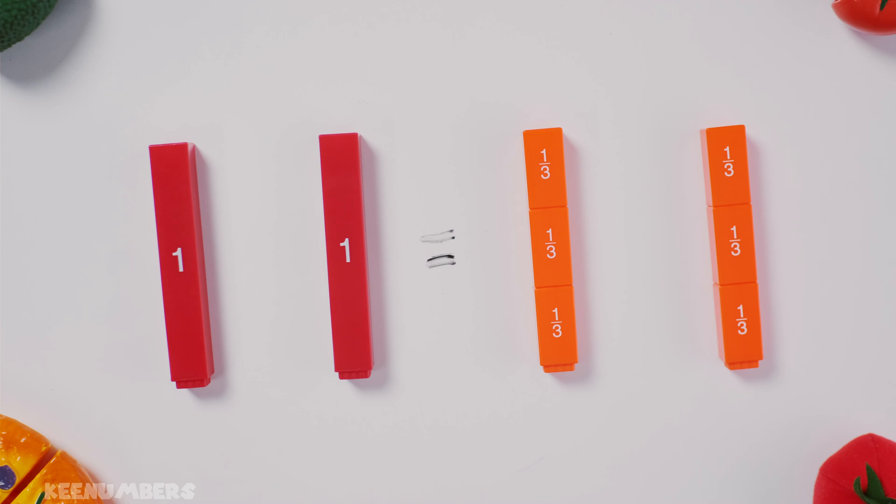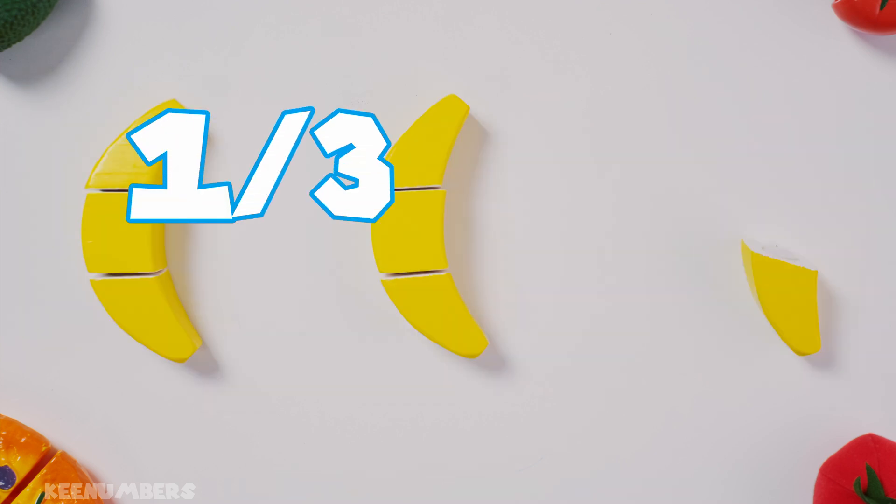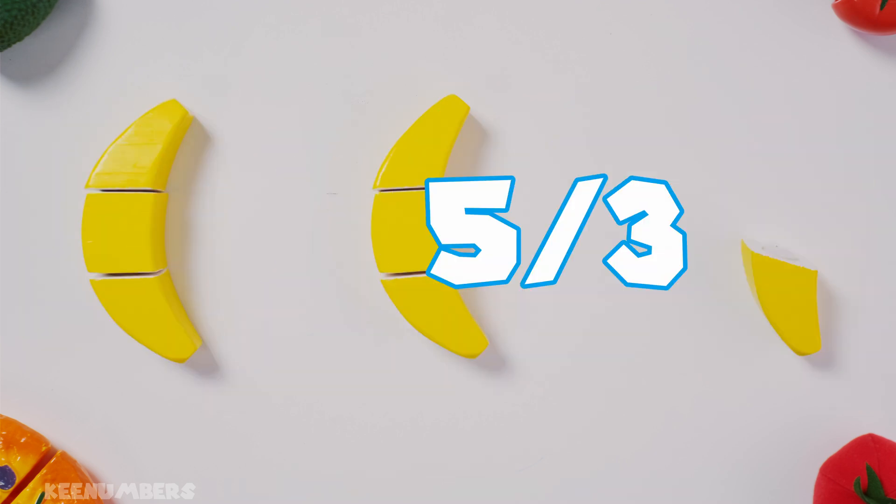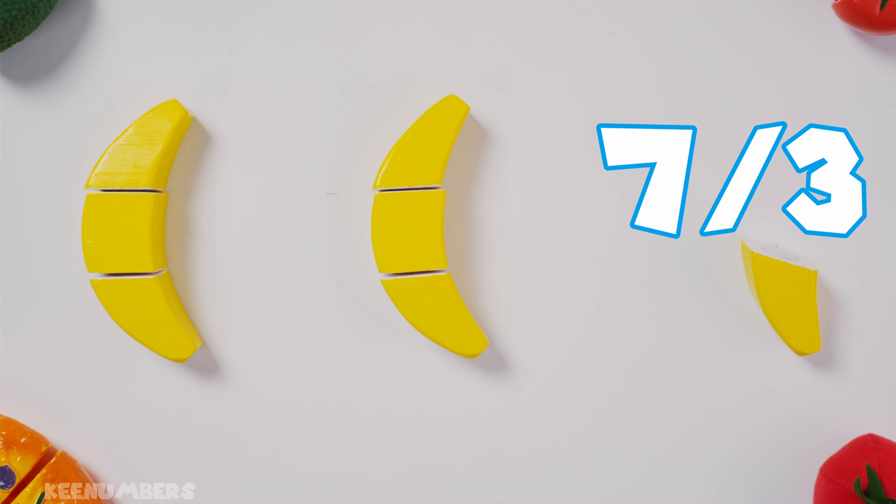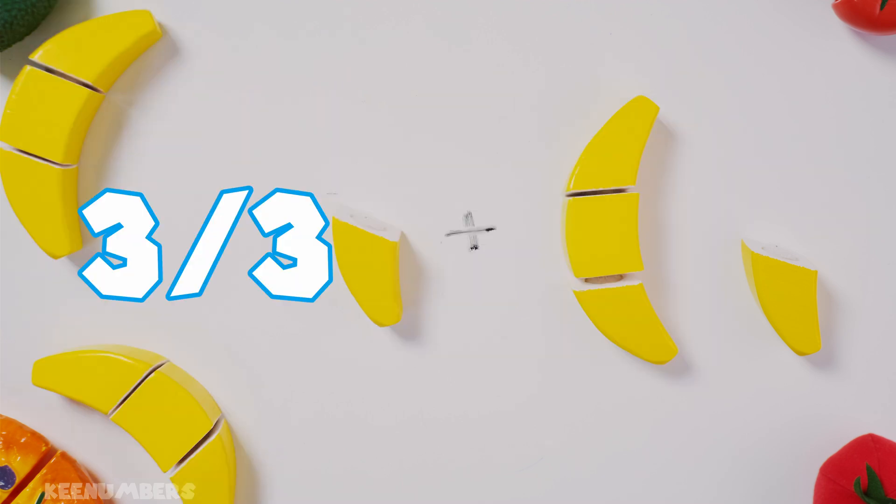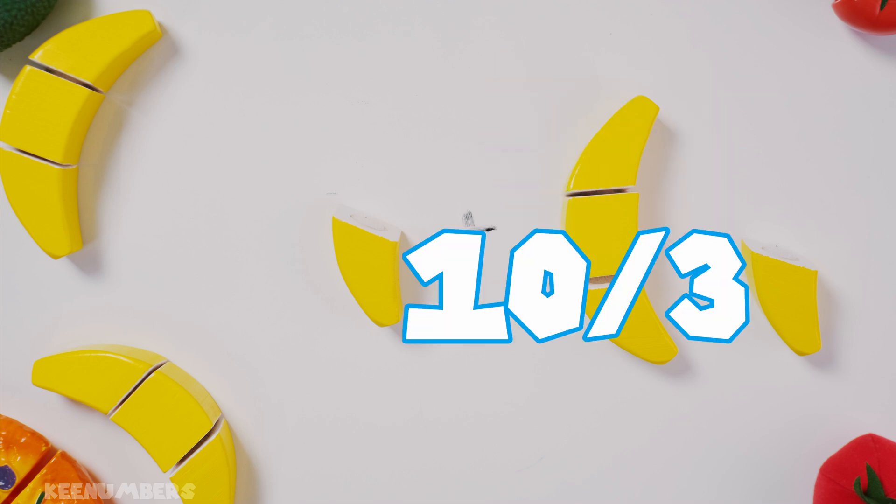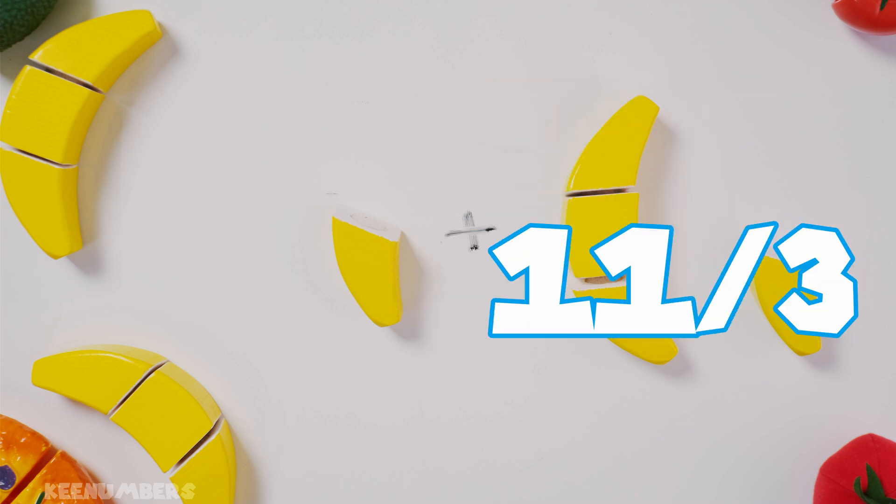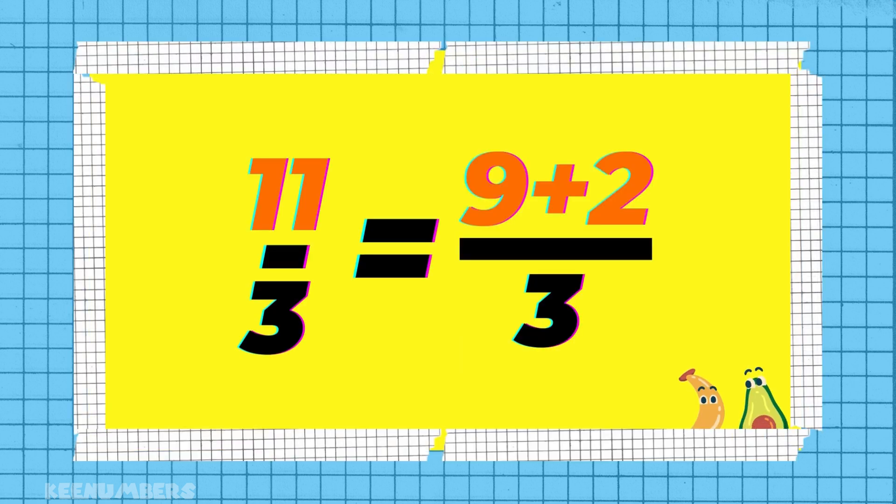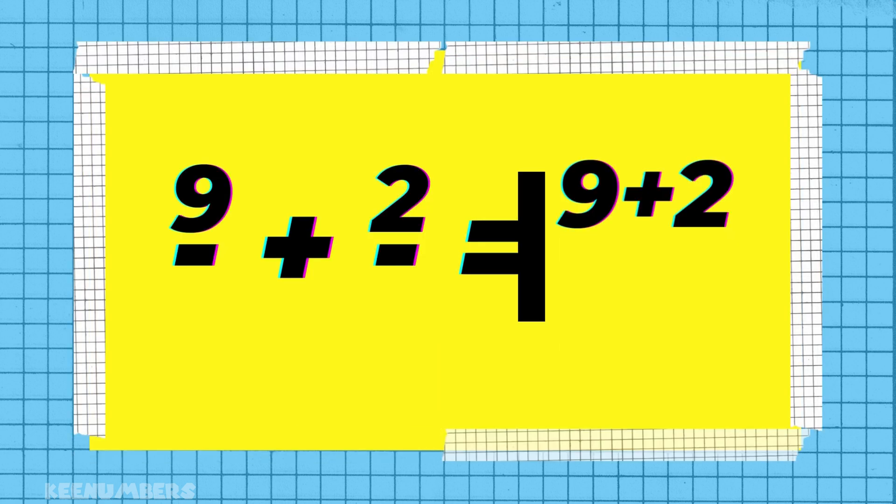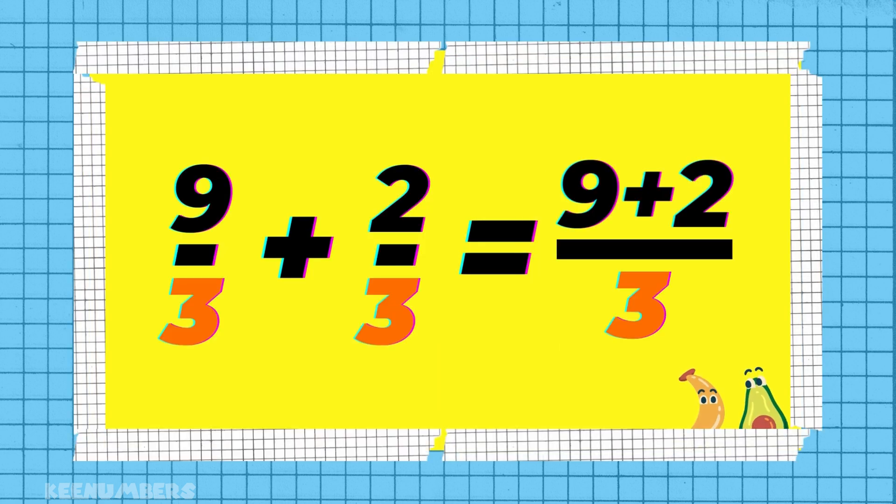That means if you have 2 whole bananas, well, that's the same thing as 6/3. So we are looking at 6/3 plus 1/3 plus 4/3. Well, what's 6 and 1 and 4? It's 11. So 11 thirds. That's good news for us. We can put that back into a whole number if we want.